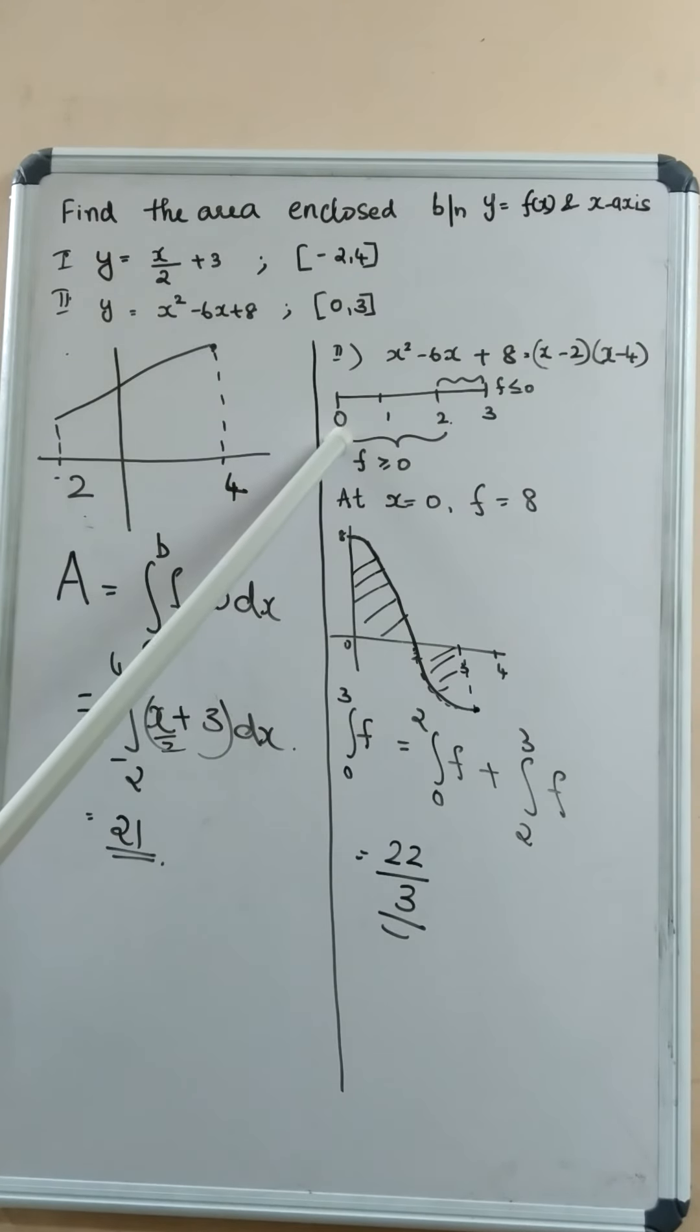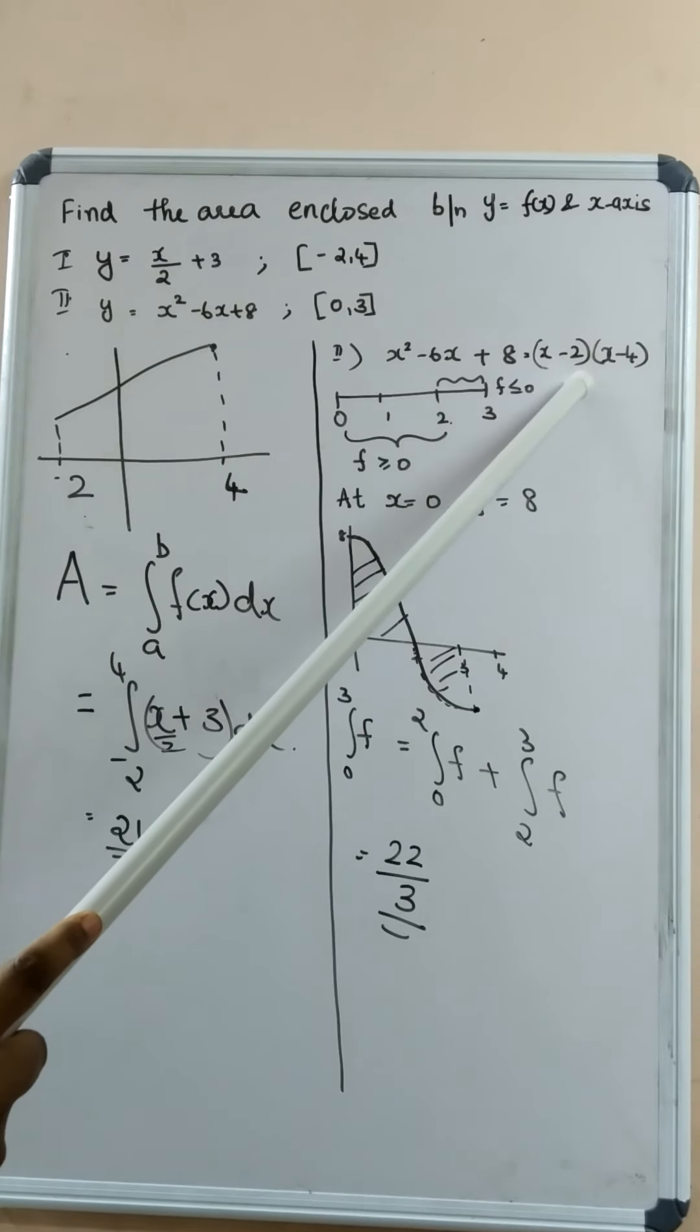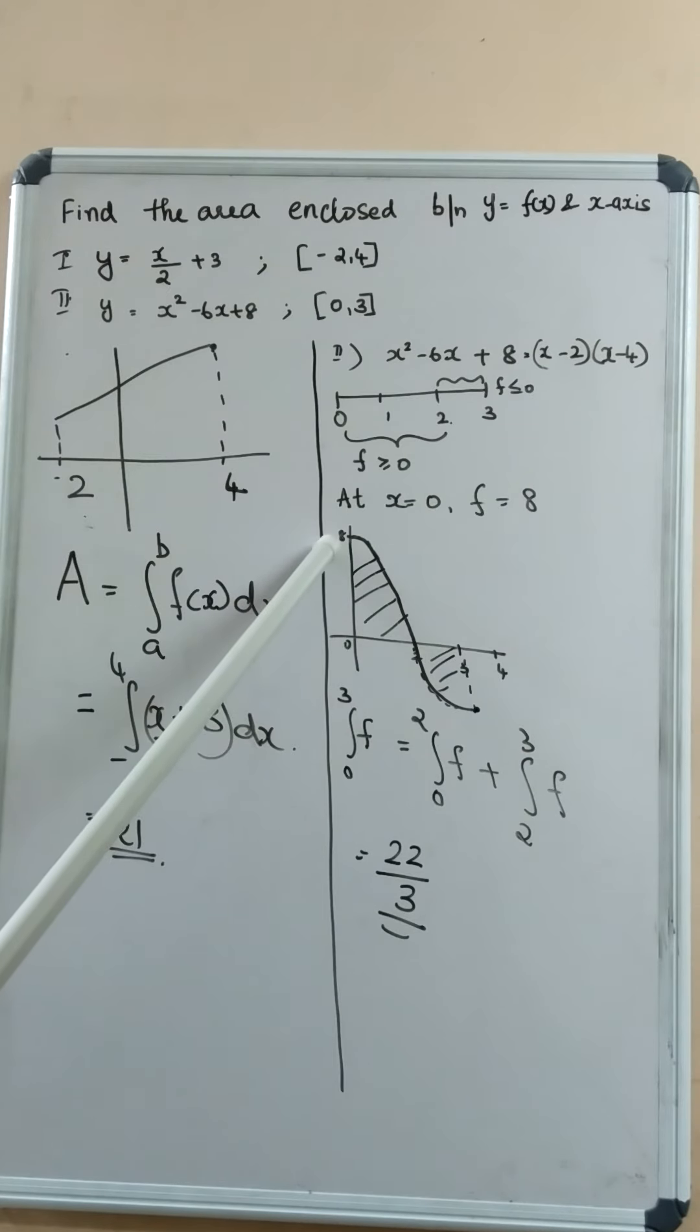And at the starting point, at x equal to 0, substitute 0 minus 2 into 0 minus 4. Therefore, at 0, the function value is equal to 8.